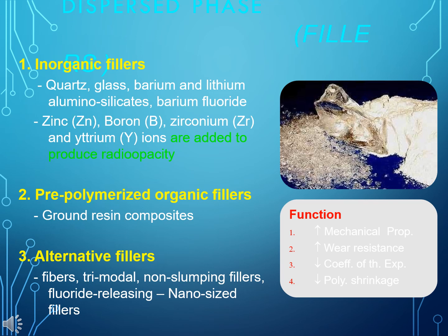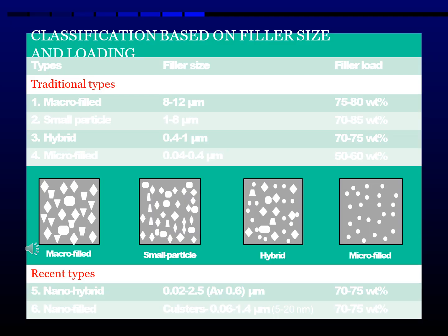The Dispersed Phase consists of fillers. Inorganic fillers include quartz, glass, barium and lithium aluminosilicates, barium fluoride, zinc (Zn), boron (B), zirconium (Zr), and yttrium ions, which are added to produce radio-opacity. Pre-polymerized organic fillers include ground resin composites. Alternative fillers include fibers, trimodal non-slumping fillers, fluoride-releasing, and nano-sized fillers. Filler sizes range from macro-filled (8–12 micrometers) to small particle (1–8 micrometers), hybrid (0.4–1 micrometer), and micro-filled (0.04–0.4 micrometers).